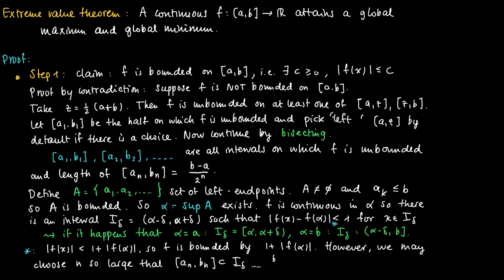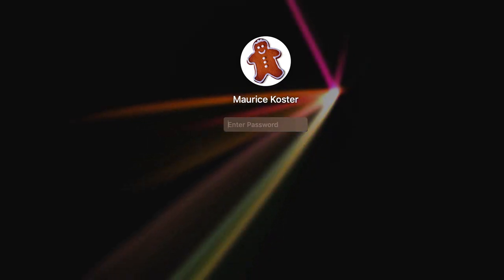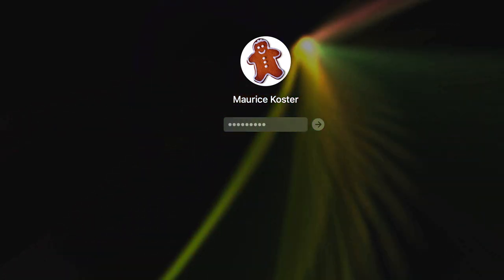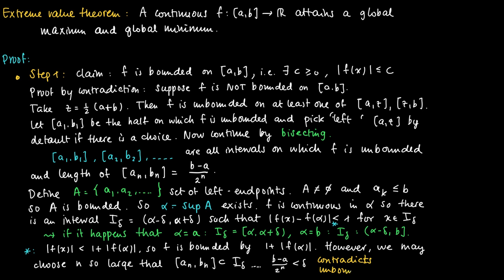But this is a contradiction, because we assumed we picked those intervals [a_n, b_n] for the reason that f is unbounded on [a_n, b_n]. But now we have shown that f should be bounded there. This contradiction proves our claim — step one of the proof of the extreme value theorem.